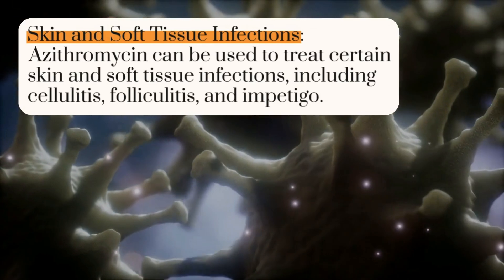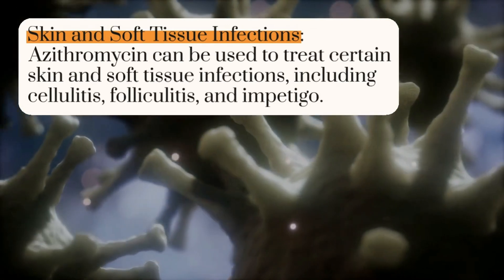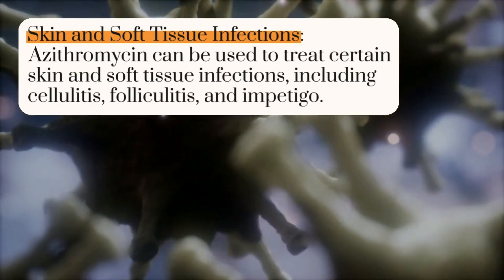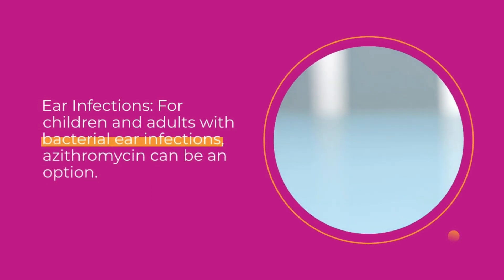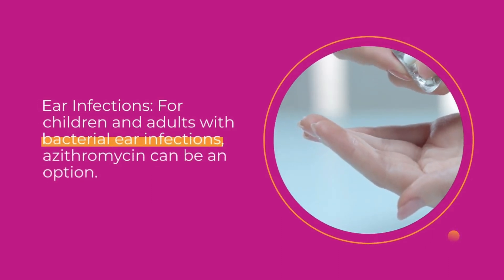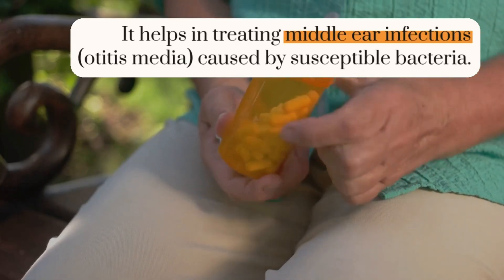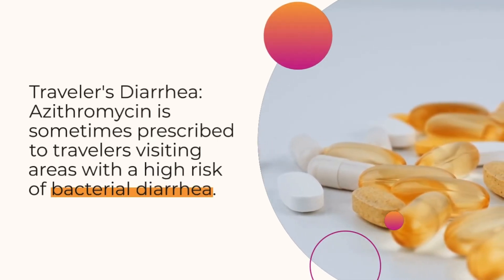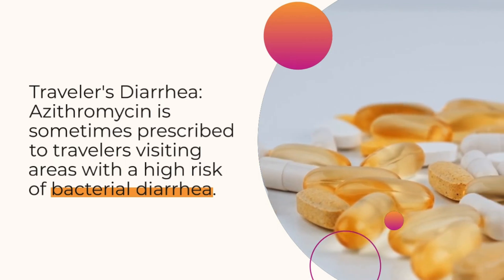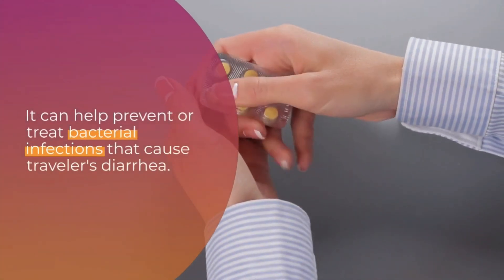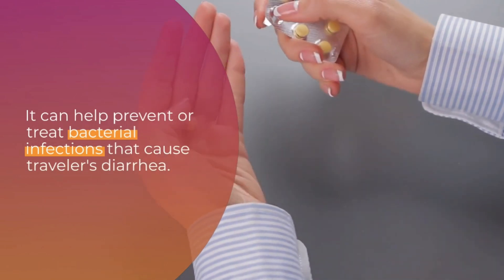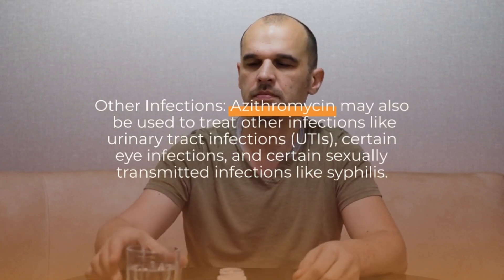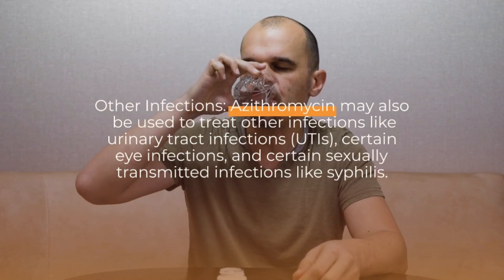Skin and soft tissue infections: Azithromycin can be used to treat certain skin and soft tissue infections including cellulitis, folliculitis, and impetigo. Ear infections: For children and adults with bacterial ear infections, azithromycin can be an option, helping treat middle ear infections caused by susceptible bacteria. Traveler's diarrhea: Azithromycin is sometimes prescribed to travelers visiting areas with a high risk of bacterial diarrhea. It may also be used for urinary tract infections, certain eye infections, and certain sexually transmitted infections like syphilis.